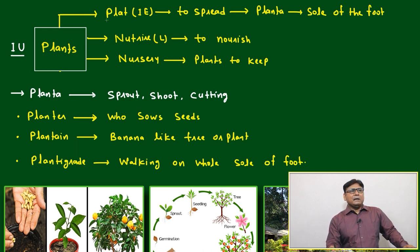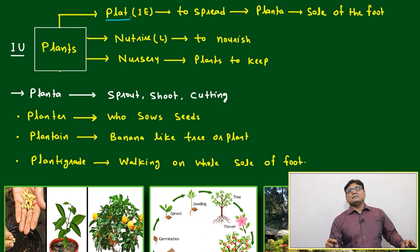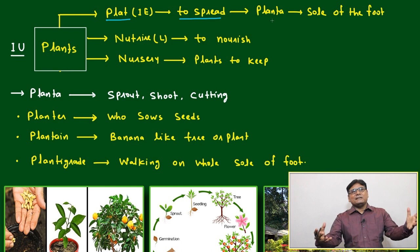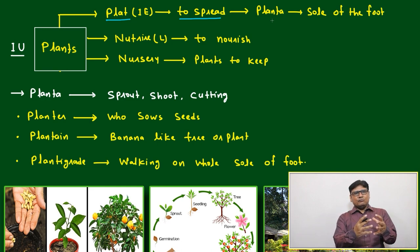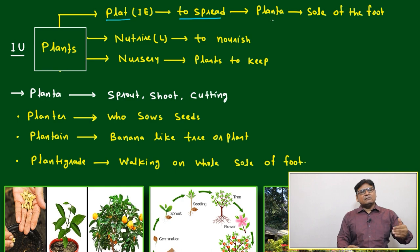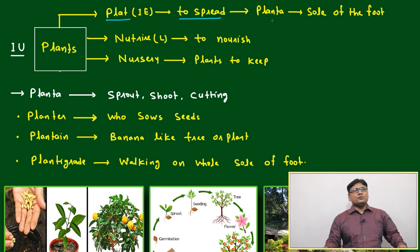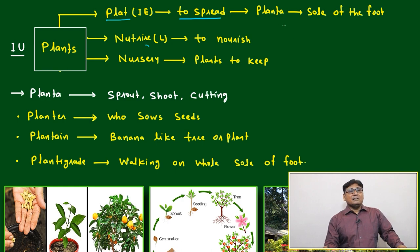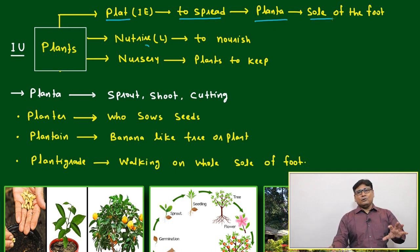The European root is 'plat,' which means to spread. A plant's general meaning is something that spreads — it will grow and spread, and after its life cycle, its seeds will also spread. Based on that, the word 'planta' comes from this root, meaning 'sole of the foot.'